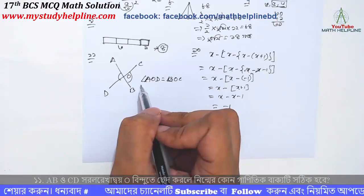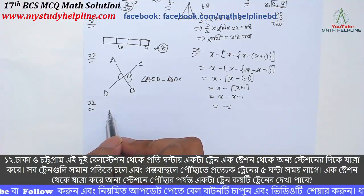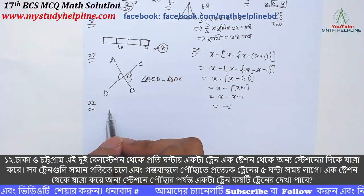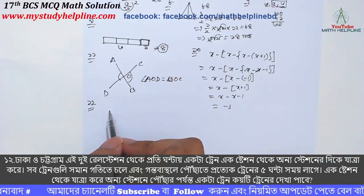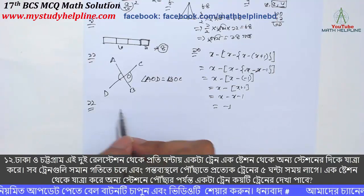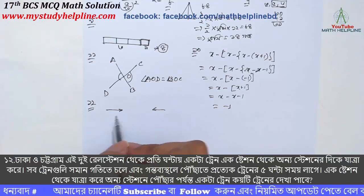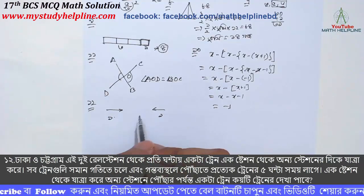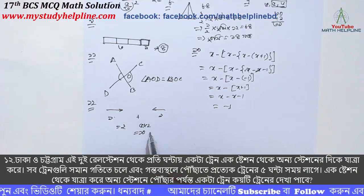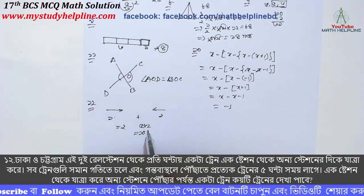Problem number 12: ઢાકા ઓ ચોট ગ્રામ. ટ્રેન Station X થી પ્રતિ કલાકે, train-to-train, same speed, 5 ઘંટા સ્ટેશન reach, station X to station Y. A ટ્રેન B ટ્રેન opposite direction, ટ્રેન ene ari double.